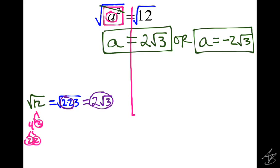The reason is, if 2 square root of 3 times 2 square root of 3 gives us 12, then negative 2 square root of 3 times negative 2 square root of 3 also gives us 12, because a negative times a negative is a positive. So A could be 2 square root of 3 or negative 2 square root of 3, and we should have both of those answers.